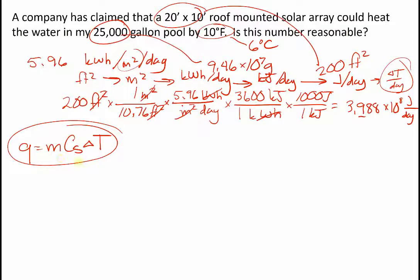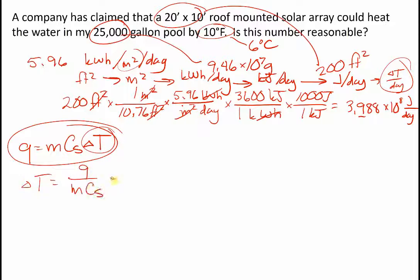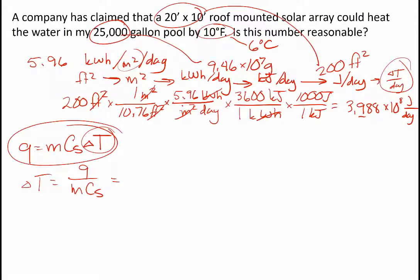Now, here, we wanted to know what temperature change is possible. That's going to give us a number to compare to their claim of 10 degrees Fahrenheit. Okay, so that comes back to this equation. I want to solve for ΔT = Q over M·Cs.